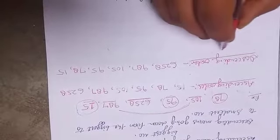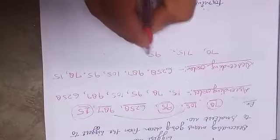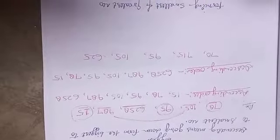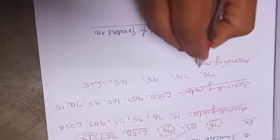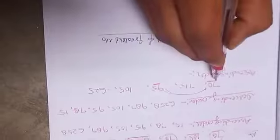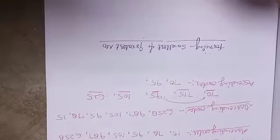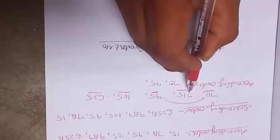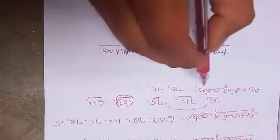Now we are taking another example with numbers: 70, 715, 95, 105, and 625. We arrange these numbers in ascending order. First, we compare the two-digit numbers — here is seven and here is nine, so 70 is lesser than 95. So first we write 70, then 95. Now the three-digit numbers have three digits each, and we compare them one by one. The first digit of 105 is one, 715 has seven, and 625 has six. Since one is the smallest, we take 105 first.